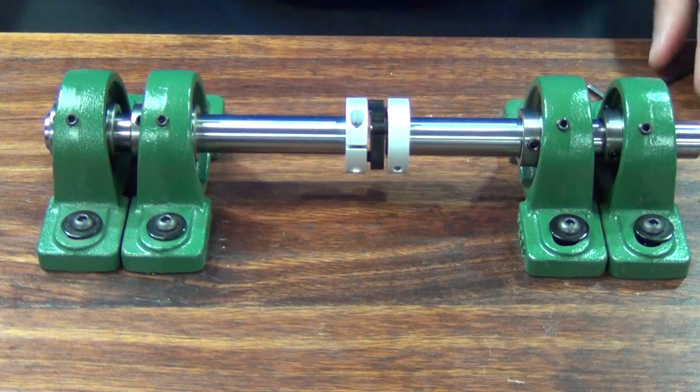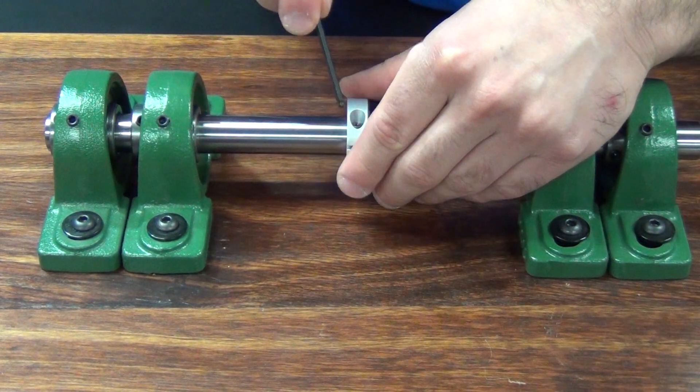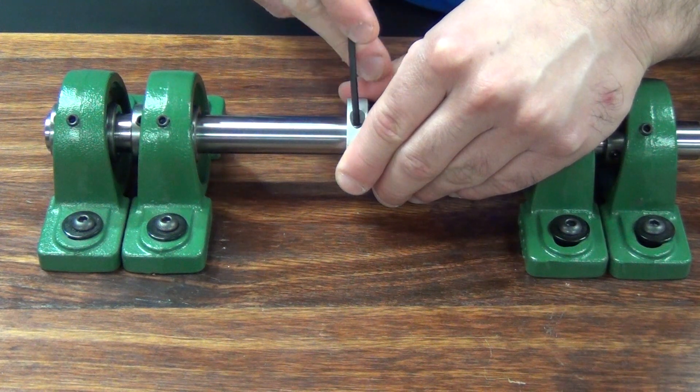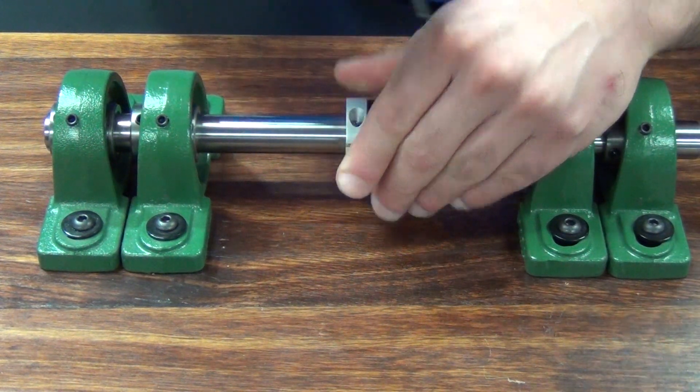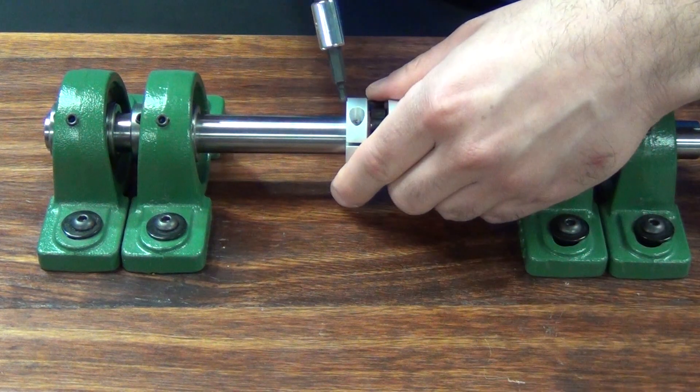Once that's done, hand tighten with the hex key. As you can see, I'm holding both hubs to try to keep that hub spacing correct. Finish tightening the assembly with a torque wrench.